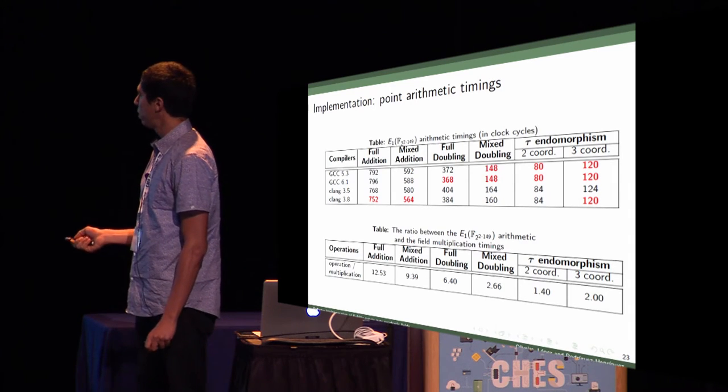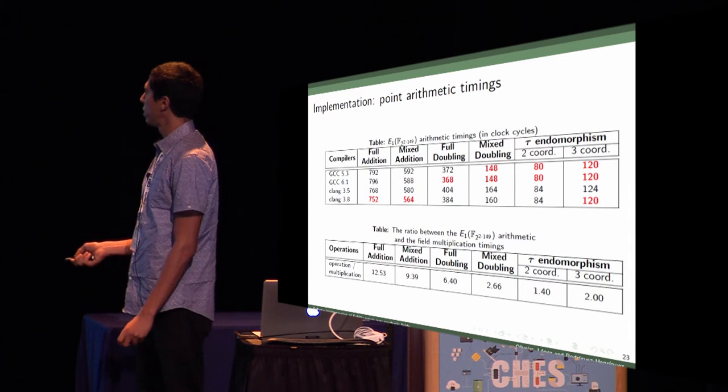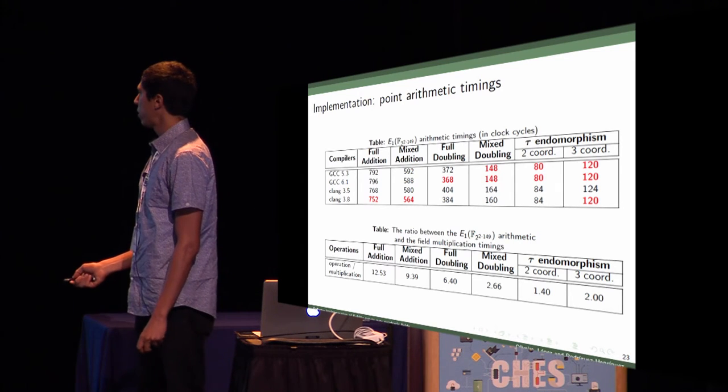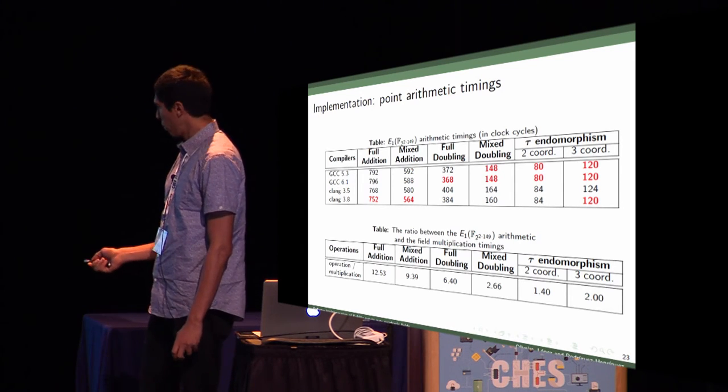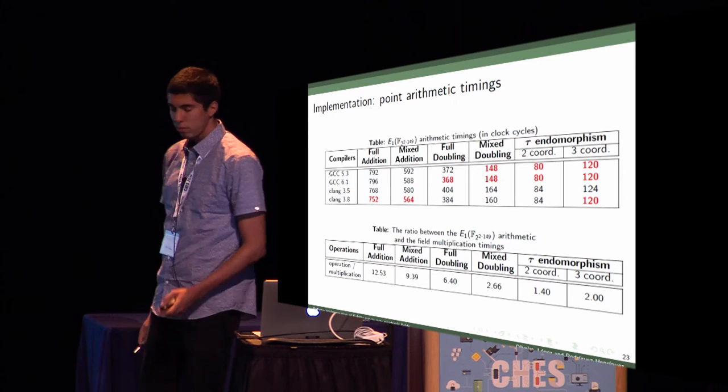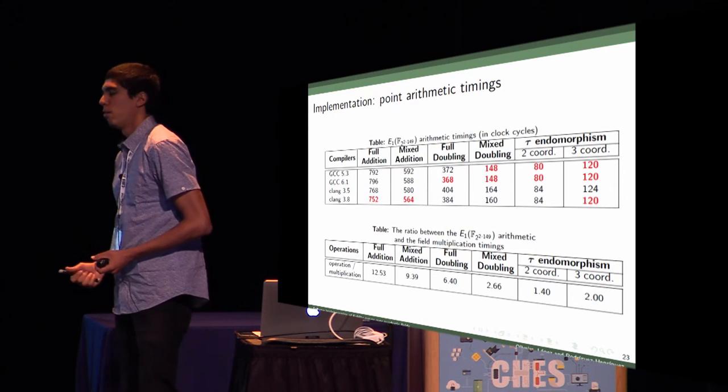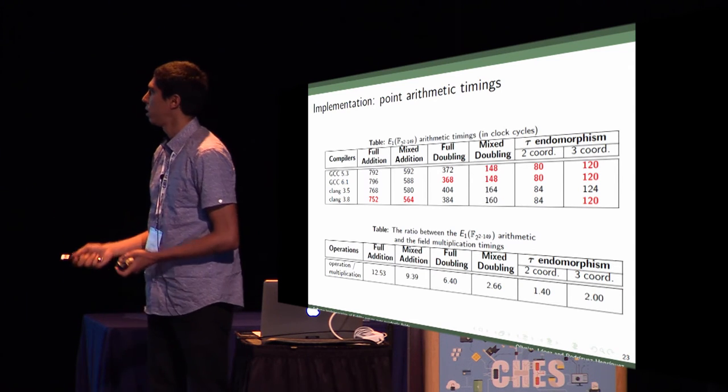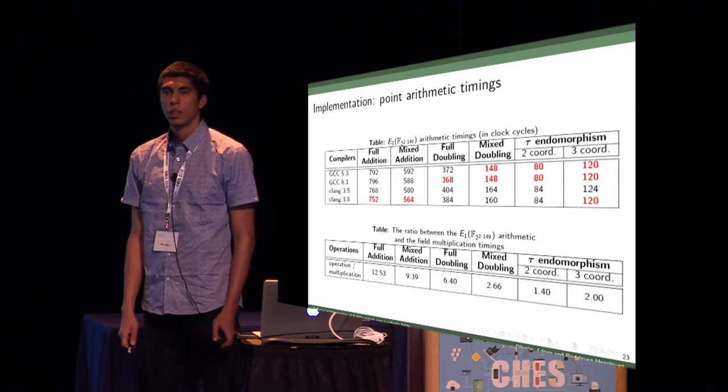This is the point arithmetic timings. We have here the addition, doubling, and tau endomorphism. You see that the endomorphism here, we are using left-to-right approach, so we need to perform tau endomorphism in three coordinates, which is still faster than doubling, more than a third faster. It's still very efficient to perform applications of Frobenius map in Koblitz curves over F4.